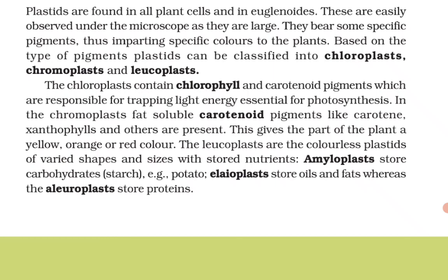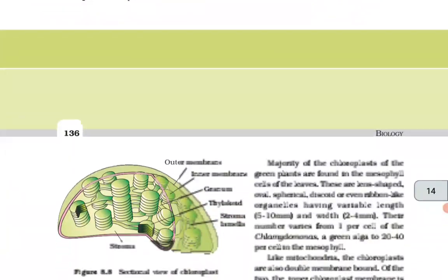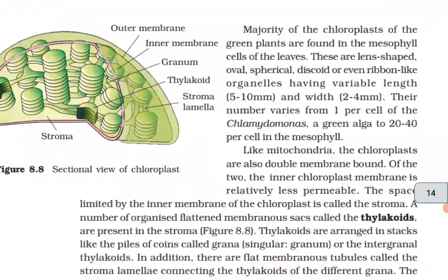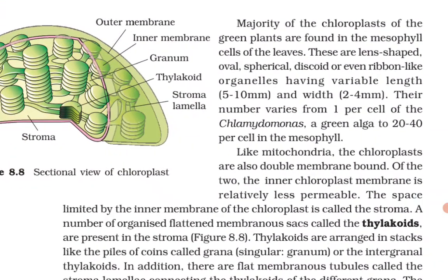In chromoplasts, fat-soluble carotenoid pigments like carotene, xanthophylls, and others are present. This gives the part of the plant a yellow, orange, or red color. The leucoplasts are colorless plastids of varied shapes and sizes with stored nutrients. Amyloplasts store carbohydrates (starch, e.g., potato), elaioplasts store oils and fats, whereas aleuroplasts store proteins.